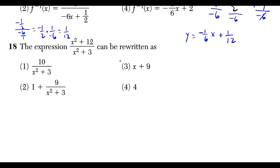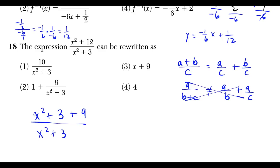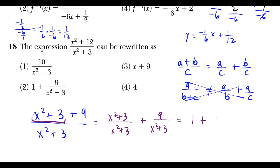Question 18: instead of long division, use algebra. For (x² + 3 + 9)/(x² + 3), split it as (x² + 3)/(x² + 3) + 9/(x² + 3). The first fraction simplifies to 1, giving 1 + 9/(x² + 3). This matches choice 2.